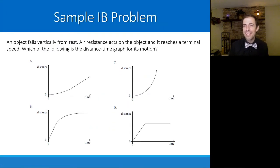There are a couple example problems that IB loves to ask about, especially in the paper one. If an object falls vertically from rest, air resistance acts on the object and it reaches a terminal speed, which of the following is the distance time graph for this object that has reached its terminal speed? Remember back, we talked about this one as one of those two graphs, which one represents the distance or displacement versus time of an object falling with air resistance?